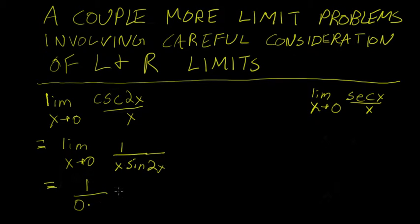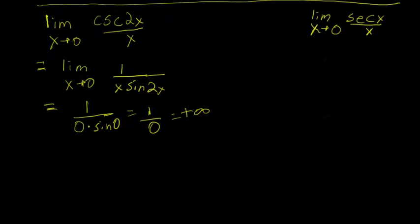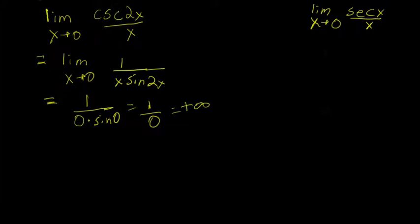And sine of 2x goes to sine of 0. But sine of 0 is 0, so you have 1 over 0. You may be tempted to say this is positive infinity — and it turns out you'll be right, but let's look at this more carefully.